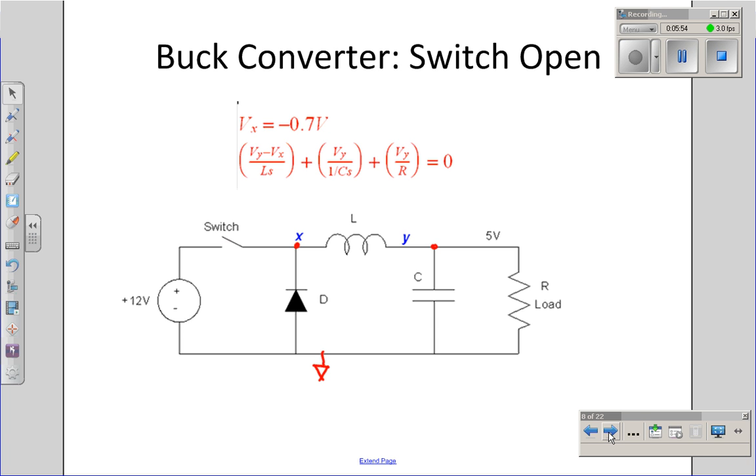Next, let's look at what happens when the switch is open. When the switch is open, I no longer care about the power supply. The voltage drop across the diode is 0.7 volts, so Vx is minus 0.7. Vy is the same as before. What's happening in this case is I have some initial condition and the output is discharging down, in theory to minus 0.7 volts. Actually, the diode turns off when it gets to zero. The voltage doesn't actually go negative.